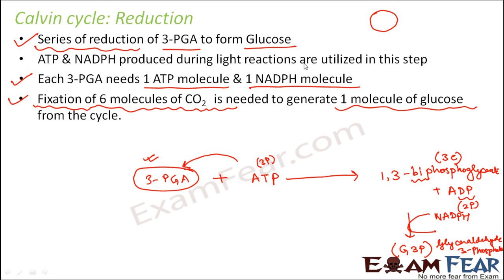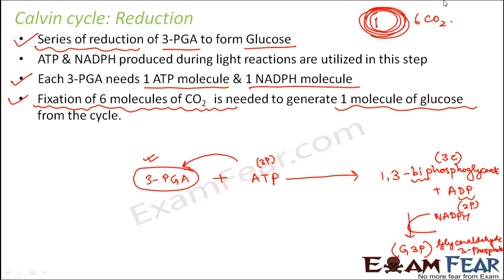Each time, one carbon dioxide molecule will be added. You have to add six molecules of carbon dioxide total. So whatever reaction I will write, I will write it considering six molecules of carbon dioxide. But please note that these six molecules of carbon dioxide will not get added at once — it will get added in each cycle. Therefore, to generate one molecule of glucose, the Calvin cycle should run for six times so that six molecules of carbon dioxide can be fixed. Considering this fact, let us try to write down the equation for step one.